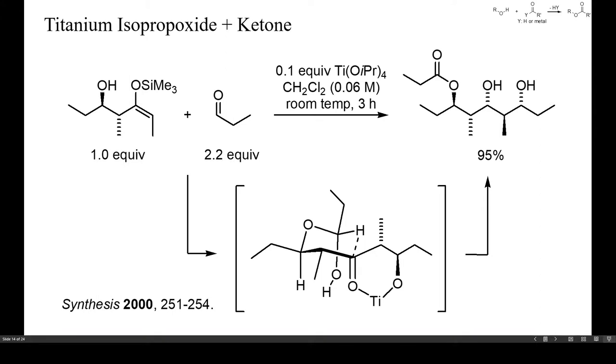This here is an example of an intramolecular hydride abstraction from a hemiacetal by a ketone. After an aldol addition, the resulting ketone was perfectly aligned to abstract hydride from the hemiacetal and be converted into a secondary alcohol with high diastereoselectivity.